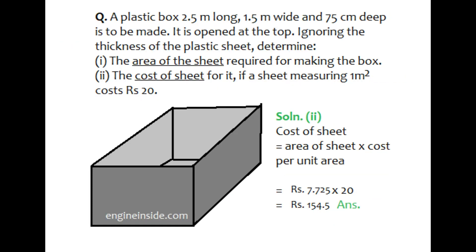In the second part of the question, we need to find out the cost of the sheet. We will multiply the area of the sheet by the cost per unit area. The area of the sheet we already found in the first part, and we multiply it by 20, so the answer is rupees 154.5.